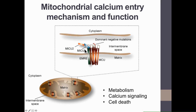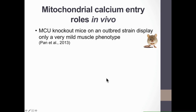MICU1 and MICU2 together sense changes in cytoplasmic calcium and keep the channel closed in steady-state conditions, while they increase the opening probability of MCU when there is an increase in cytoplasmic calcium. Given the importance of the cellular functions mediated by mitochondrial calcium entry, there was great interest in generating animal knockout models for the proteins that mediate this process. However, surprisingly, MCU knockout mice display only a very mild muscle phenotype, casting some doubt on the real importance of mitochondrial calcium entry in vivo for physiological processes.